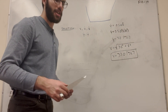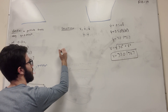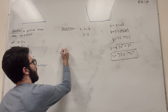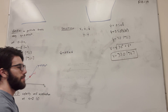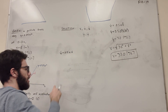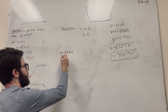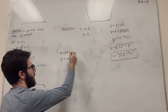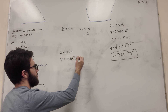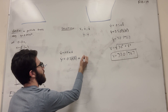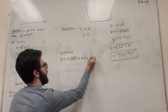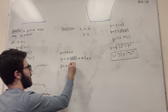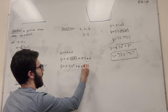Now let's find acceleration. We start with y-dot equals 0.5 times x times x-dot, and we take the second derivative. We need to apply the product rule because we have x and x-dot next to each other. Taking y-double-dot: the first term gives 0.5 times x-dot times x-dot, and the second term gives 0.5 times x times x-double-dot. Simplified: y-double-dot equals 0.5 times x-dot squared plus 0.5 times x times x-double-dot.